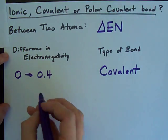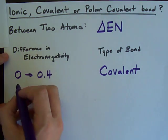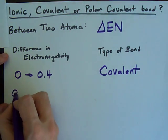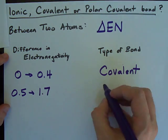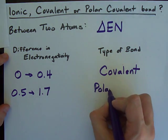If the electronegativity difference is just above 0.4 up to about 1.7, we usually call it polar covalent.